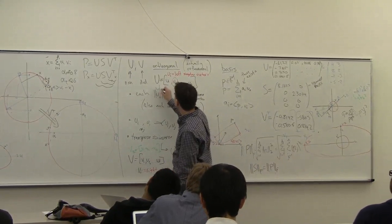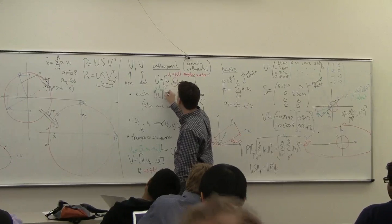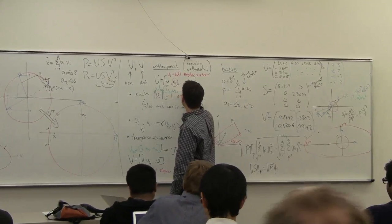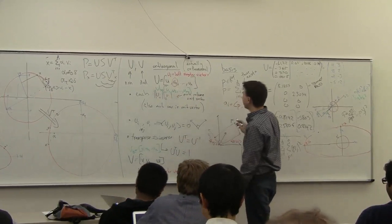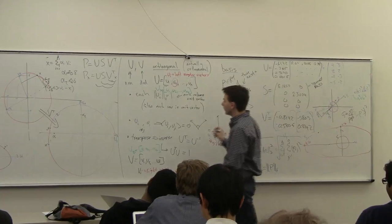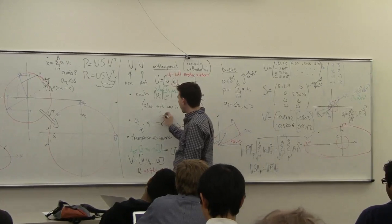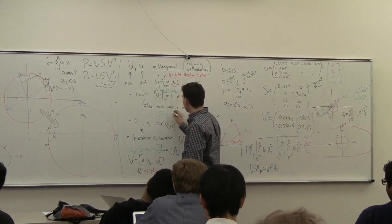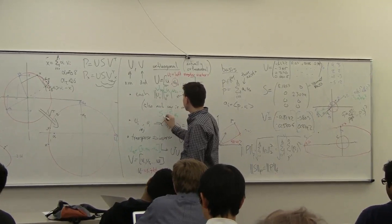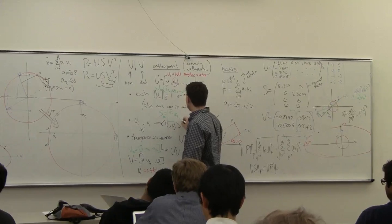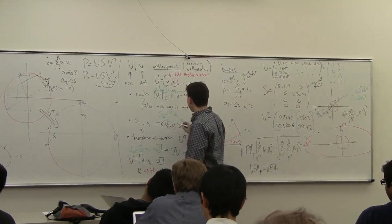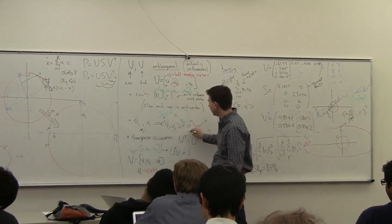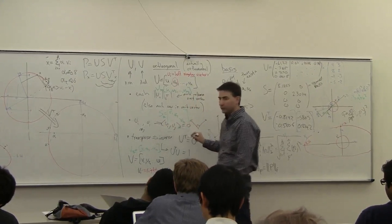You take U, and you get UK, which is equal to U1, U2, up to UK. And you do the same thing with S, which, so S is what I erase here, but this is you sigma 1, sigma 2. So K, you go up to sigma K, and then you still have to have these zeros at the bottom.